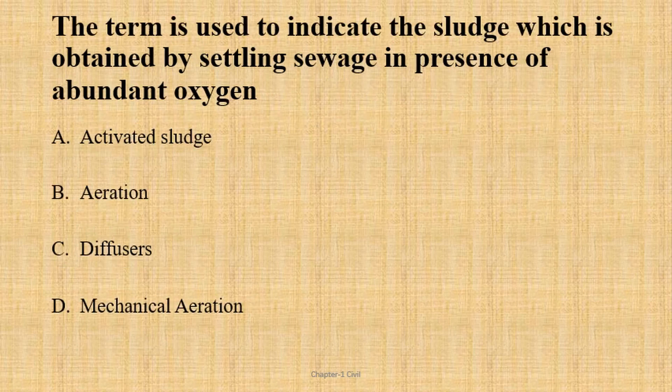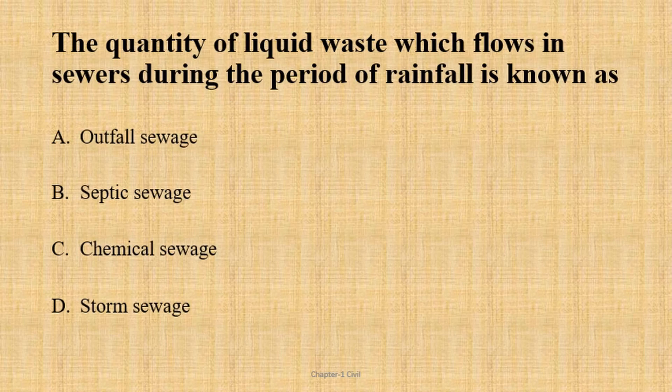The next environmental question: the term used to indicate the sludge obtained by settling sewage in the presence of abundant oxygen. The answer is activated sludge. The quantity of liquid waste which flows in sewage during the period of rainfall is known as storm sewage.